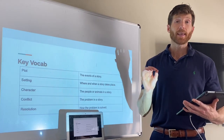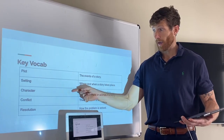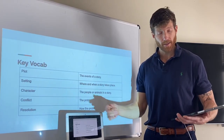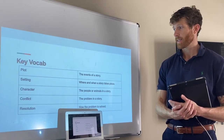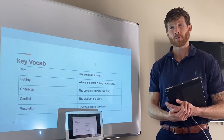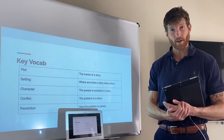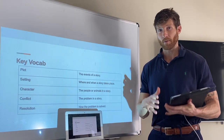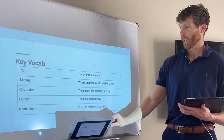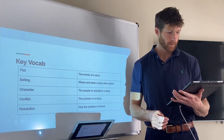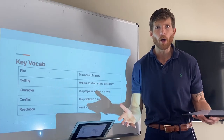Some key vocabulary for today's lesson: plot is the events of a story; setting is where and when a story takes place; character refers to the people or animals in a story, or who the story is about; conflict is the problem in a story; and resolution is how that problem is solved. A story would not be complete or interesting to read without all the parts working together.